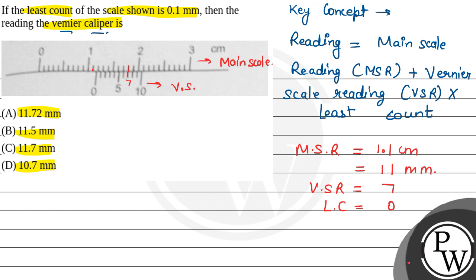So the object reading will be equal to main scale reading, which is 11, plus vernier scale reading, which is 7, multiplied by 0.1. So this is 11 plus 0.7, that means 11.7 mm. This is the reading of the vernier scale object.